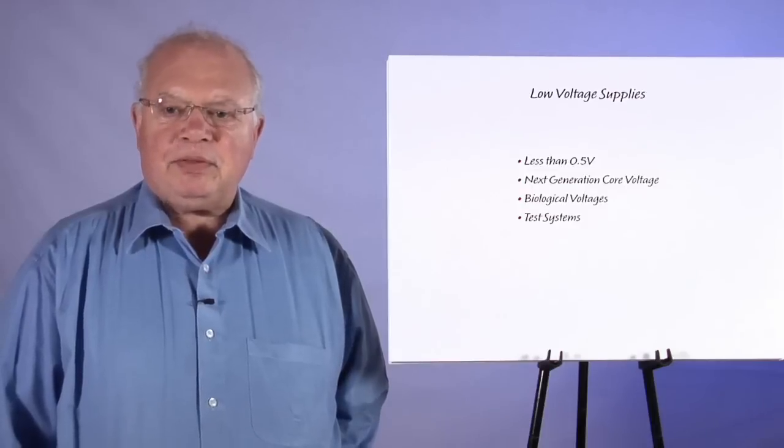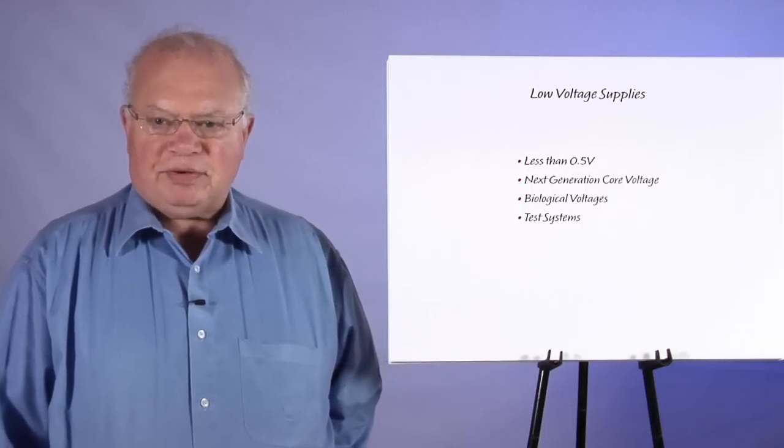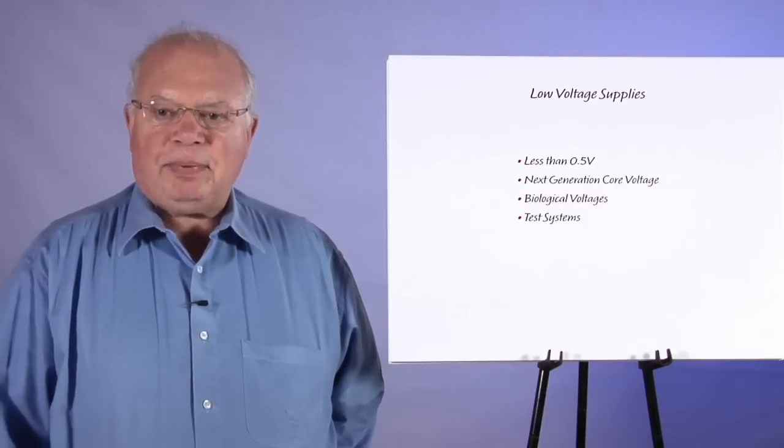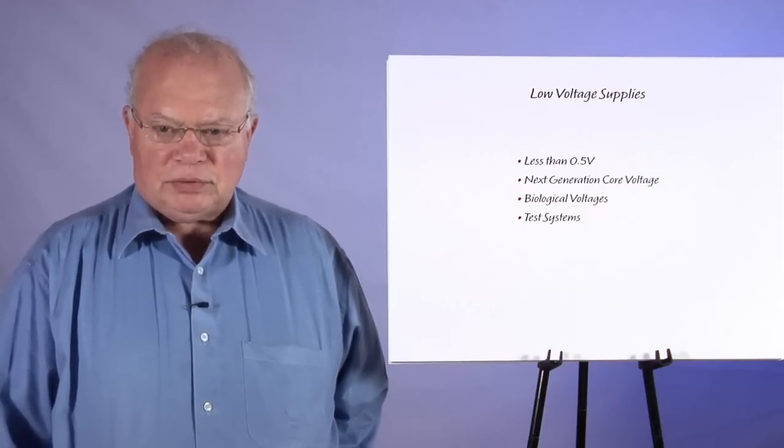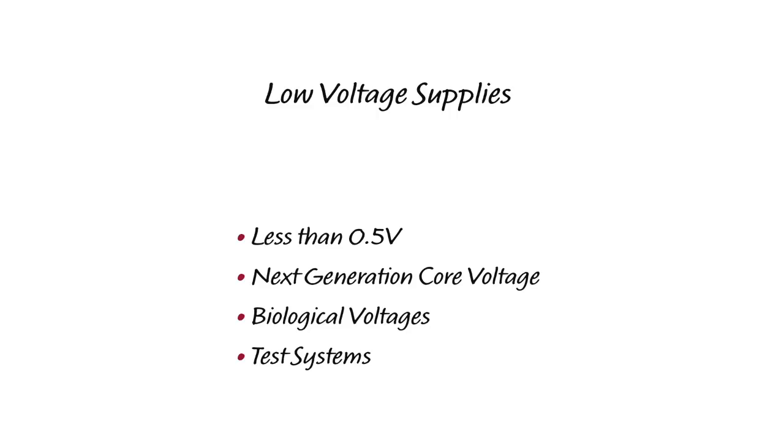In 2007, we came out with a new architecture of a current source reference, and that makes it easy for the output of a power supply to go down to 0 volts. If you look at the next generation of core voltages or the next generation of FPGAs, they are made with a finer line-width process, and some of those cores go down to 0.5 or even 0.4 volts when they're running at high frequency and high density. So there will be a need for lower power supplies. Biological supplies are always less than a volt. A lot of test systems and biasing is needed to get down below a volt.